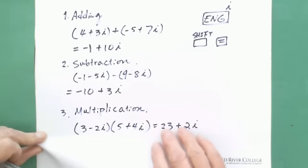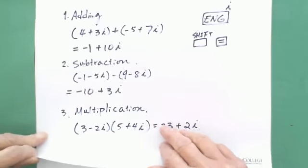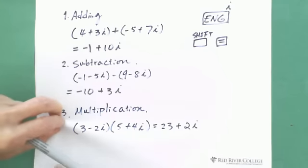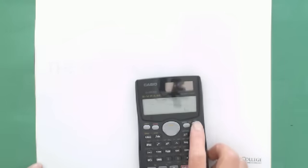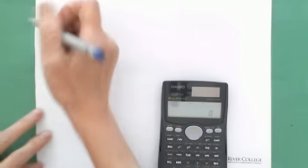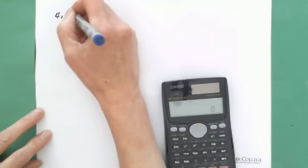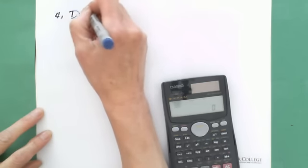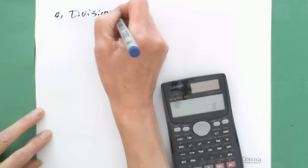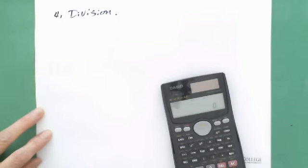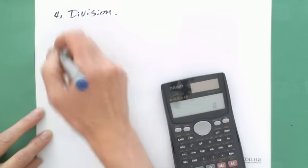Next, I want to show you division. How to do division with complex numbers using the calculator. For division, let's say the question is 7 plus 2i divided by 4 minus 3i.